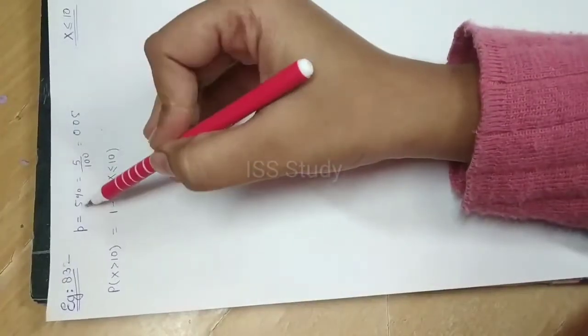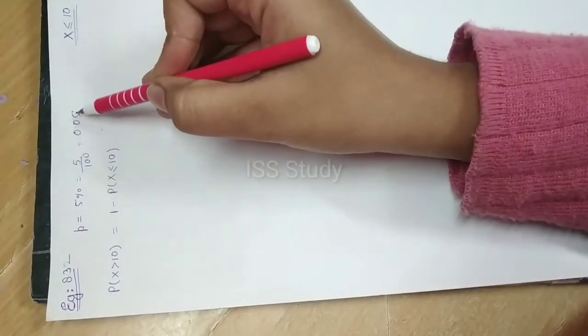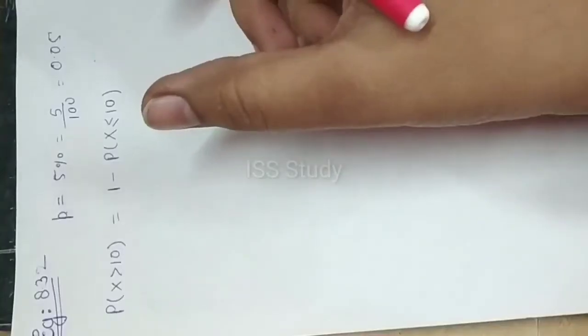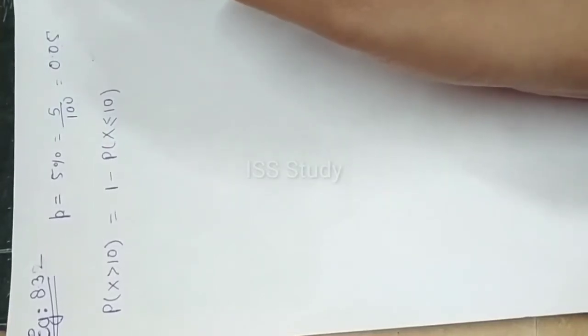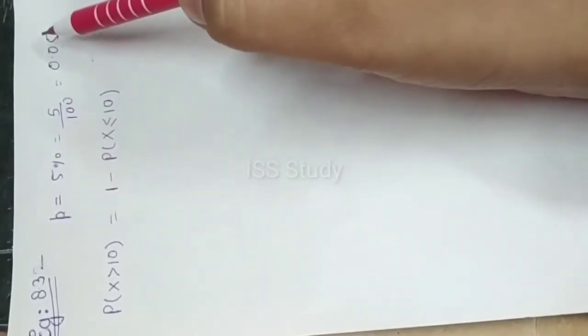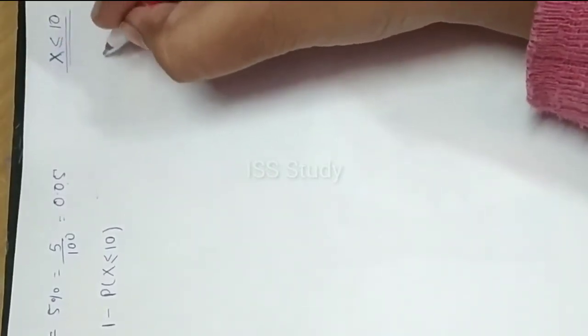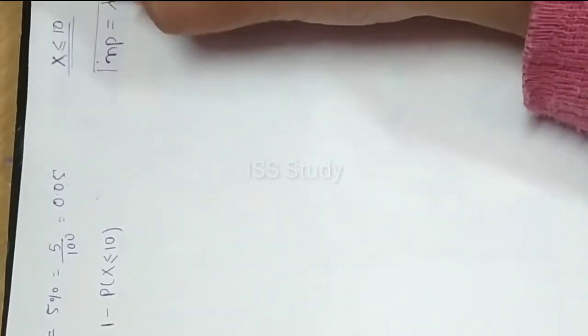Here the probability of defective is 0.05, which is very small. We have studied in Poisson distribution that when the probability is very small and n is large, we use the Poisson approximation. So we need to find lambda, and we know that for the Poisson approximation of binomial distribution, lambda equals np.